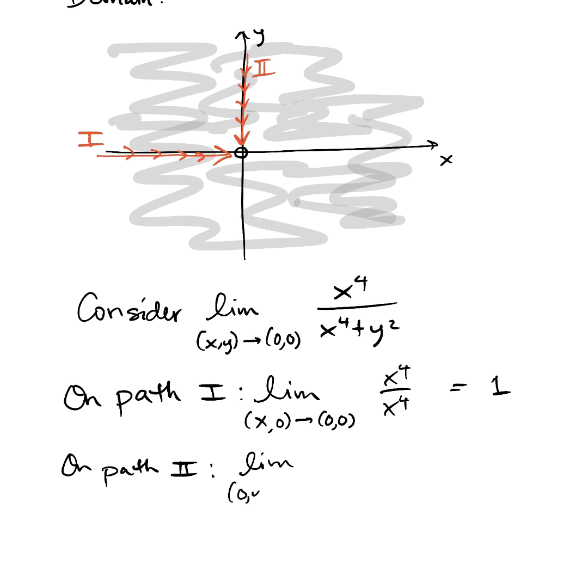it looks like we're considering the limit as zero comma y approaches the origin, zero, zero. And when x is zero, look at our function, zero over zero plus y squared, which is zero. So on path two, the function approaches zero as you approach the origin. But on path one, the function approaches one as you approach the origin. So the limit as you approach the origin on whatever path does not exist because two separate paths gave two separate values.